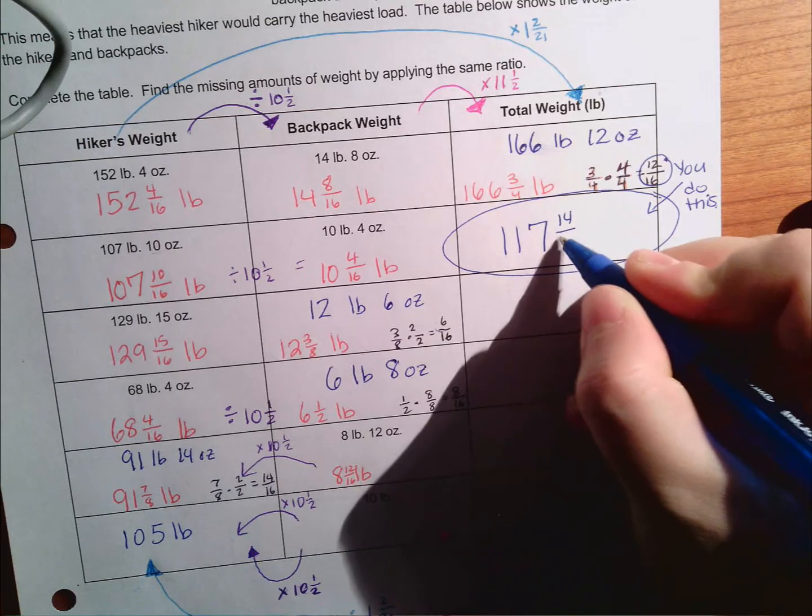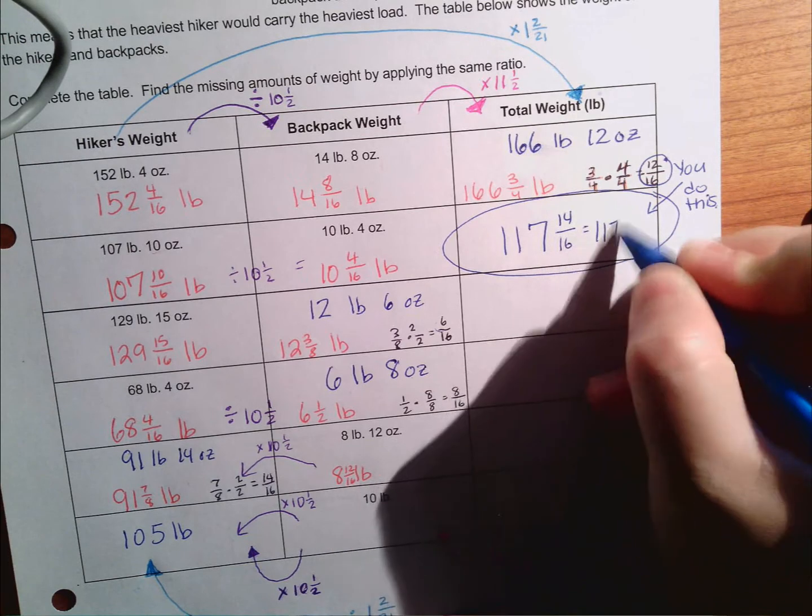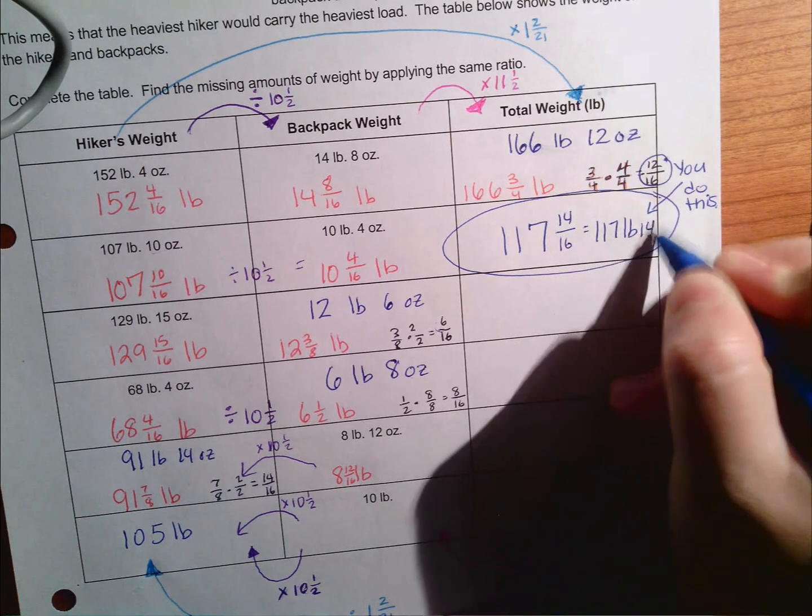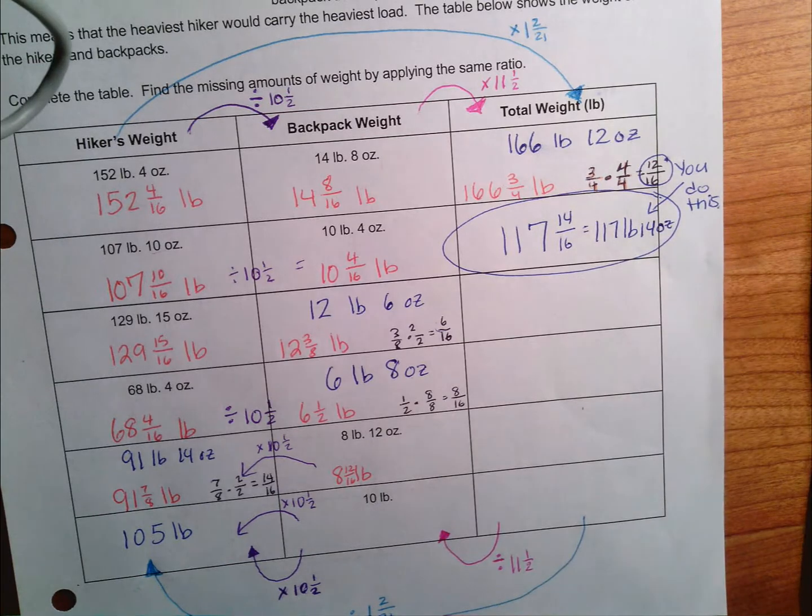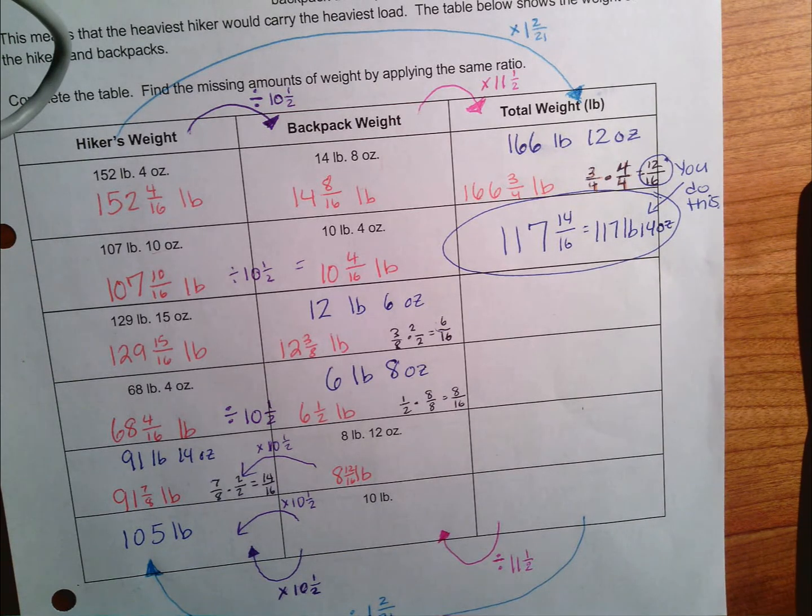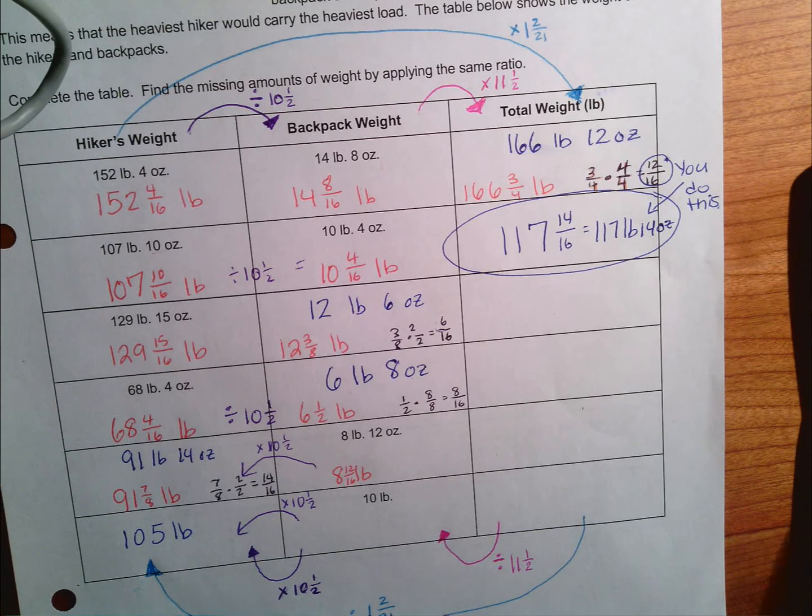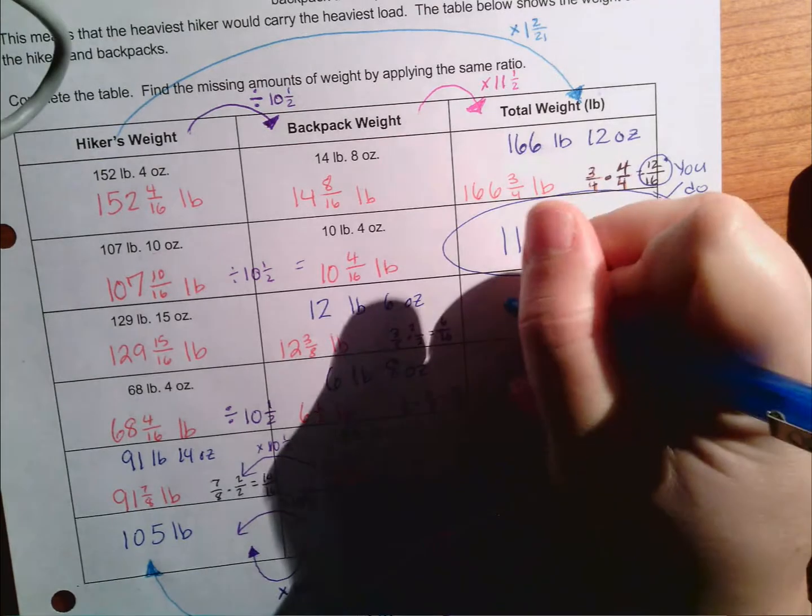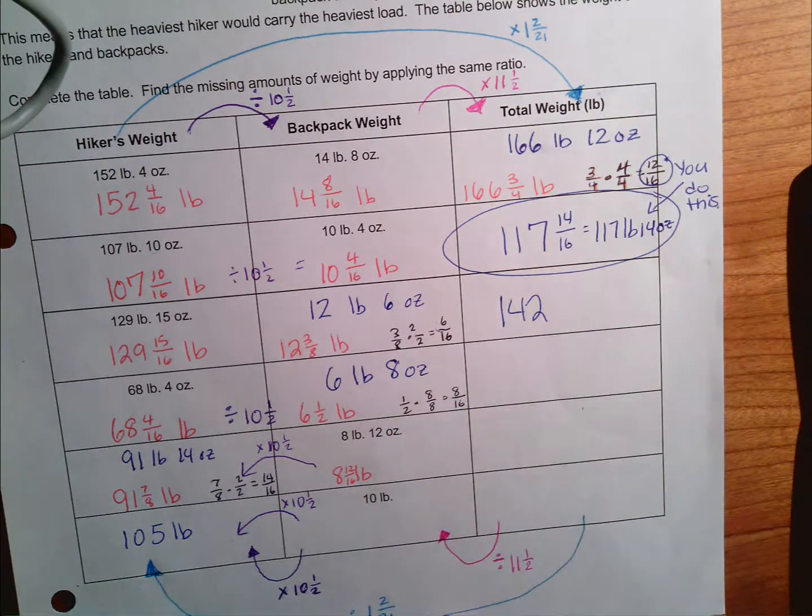The next one: 129 pounds and 15 ounces. And we know that the backpack weighs 12 pounds and six ounces. That's going to give us 142 pounds and five sixteenths of a pound, so 142 pounds five ounces.